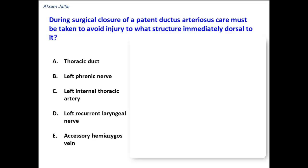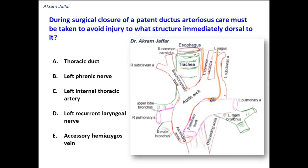During surgical closure of a patent ductus arteriosus, care must be taken to avoid injury to what structure immediately dorsal to it. Looking at the structures in the superior mediastinum, this is the site of the ligamentum arteriosum — the remnant of the ductus arteriosus — meaning this is the location of the ductus arteriosus. If it remains patent, it must be ligated.